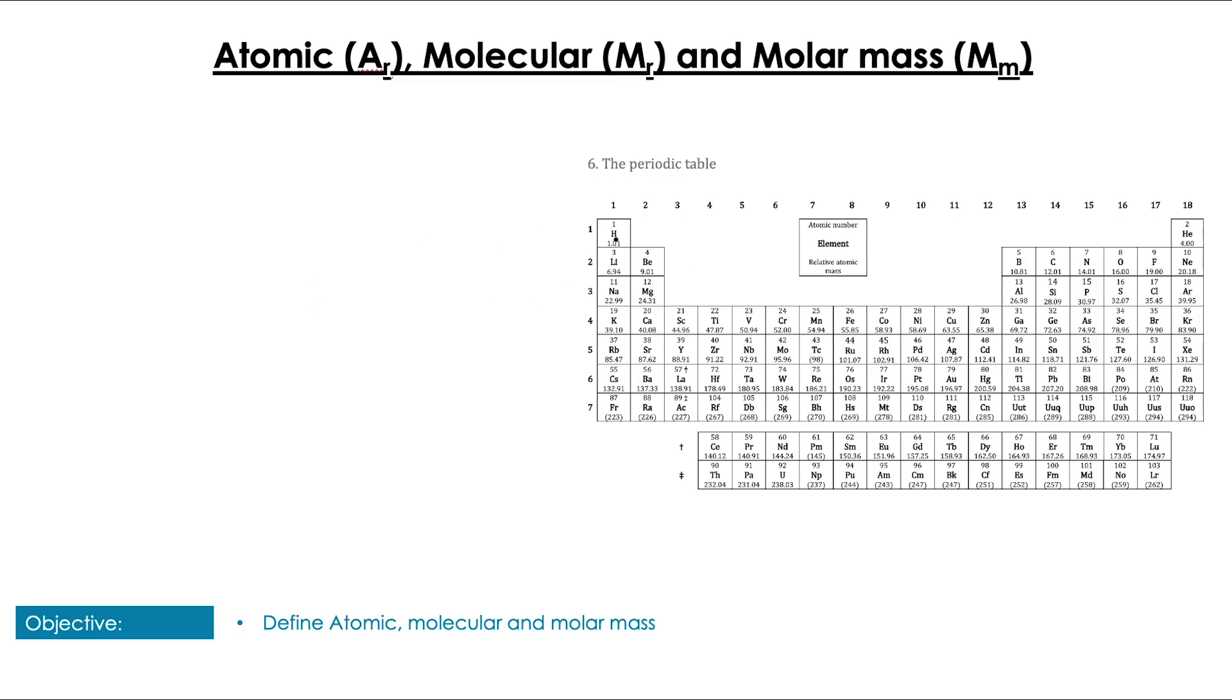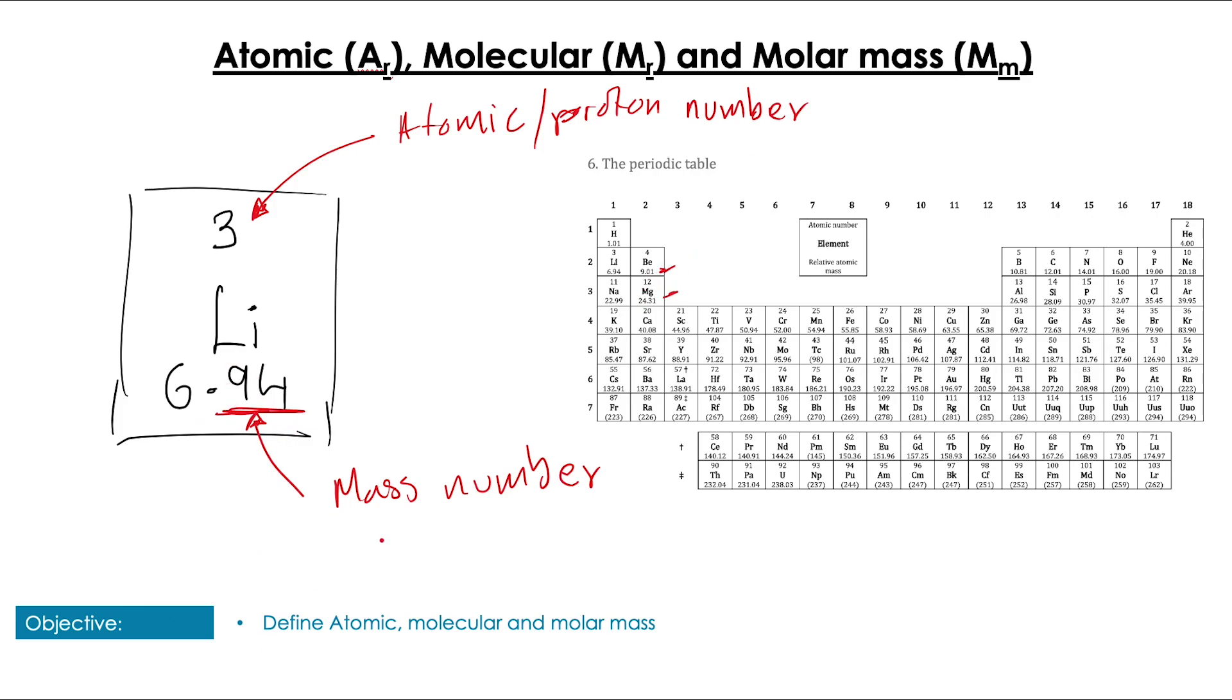Using the periodic table is going to be key to us doing this successfully. So if we take the case of lithium, we've got the number three above the symbol, which is the atomic or proton number, that tells us the number of protons there are. And below we have this decimal, 6.94. This is the mass number. And the reason it's a decimal is because on this periodic table, it's taking into account the percentage of naturally occurring different isotopes of that element.